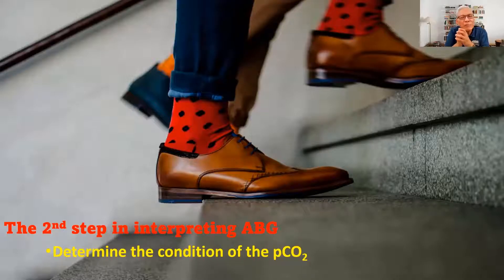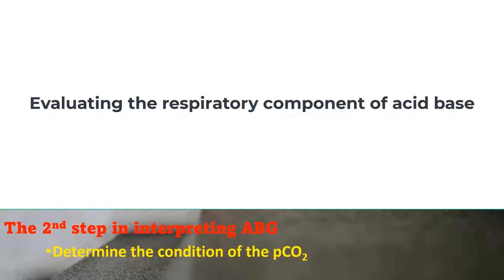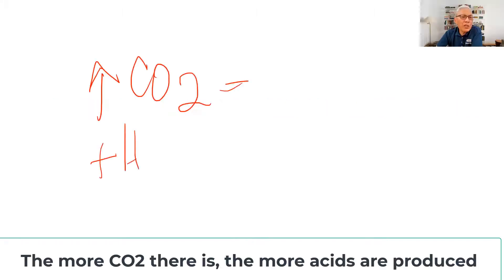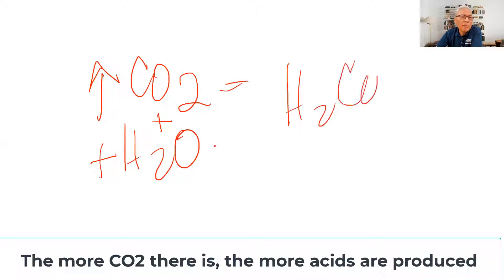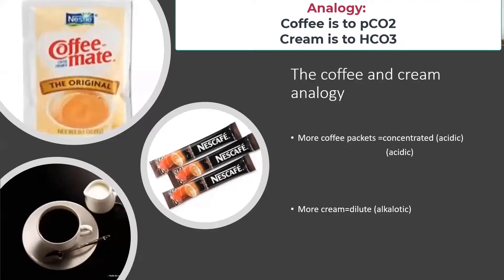The second step in interpreting arterial blood gas is to determine the condition of the PCO2. We're now evaluating the respiratory component of acid-base balance. If you have an increase in CO2, the more acids you're going to have. The reason for that is carbon dioxide and water is equal to carbonic acid. Whenever you look at the carbon dioxide, imagine that it's coffee — I have the analogy of coffee and cream.